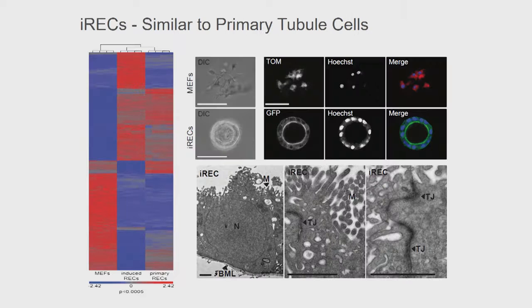These IRECs have a very similar gene expression profile to their native counterparts, and when we see them in 3D culture, they form these spheroids. Also on electron microscopy, they show striking similarities to real tubule cells, so they very much look like tubule cells.